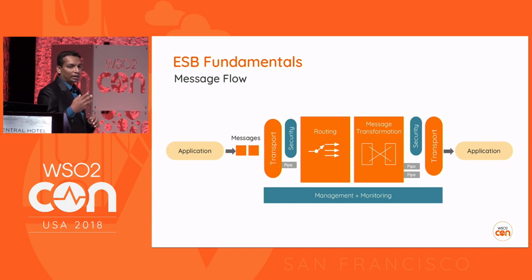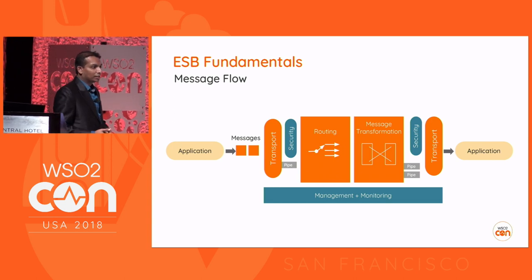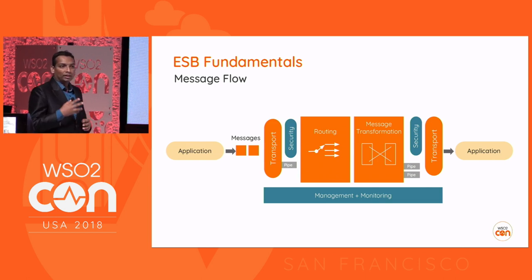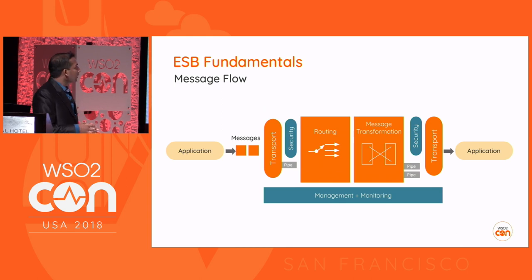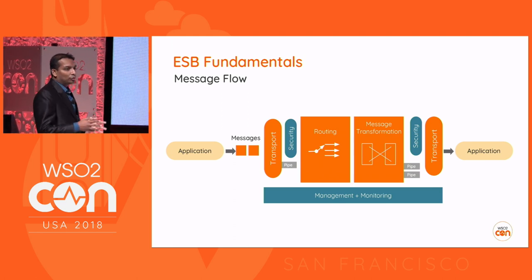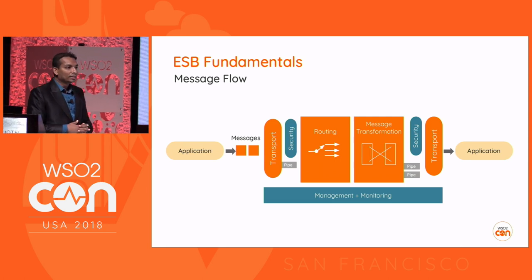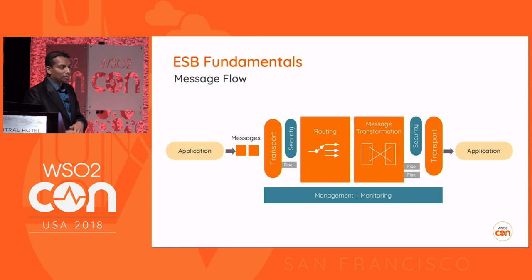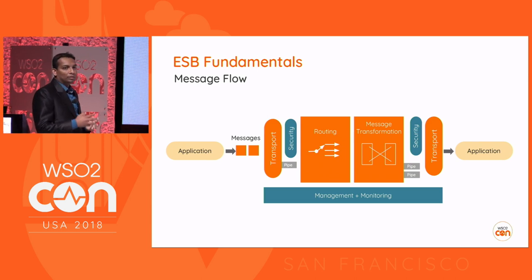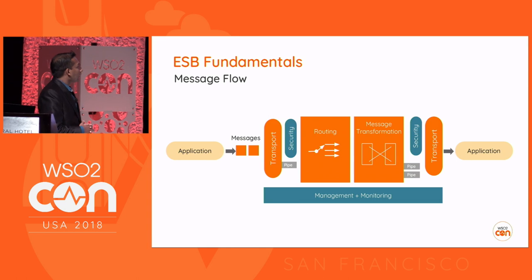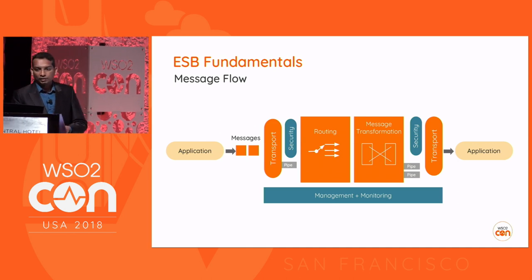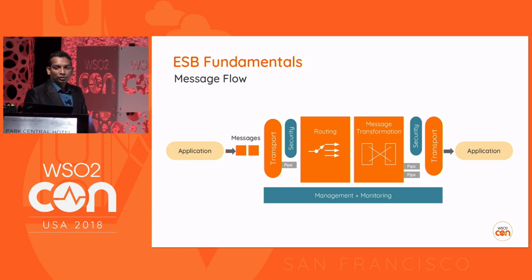When delivering a message to some kind of backend service, we go through the same set of layers. If you want to apply message level security, it will go to the quality of service layer and then be handed over to the transport layer. The transport layer is divided into two parts: transport listeners, which convert the wire level message into the message context, and transport senders, which do the reverse — converting the message context into the wire level format — and deliver the message to the backend service.